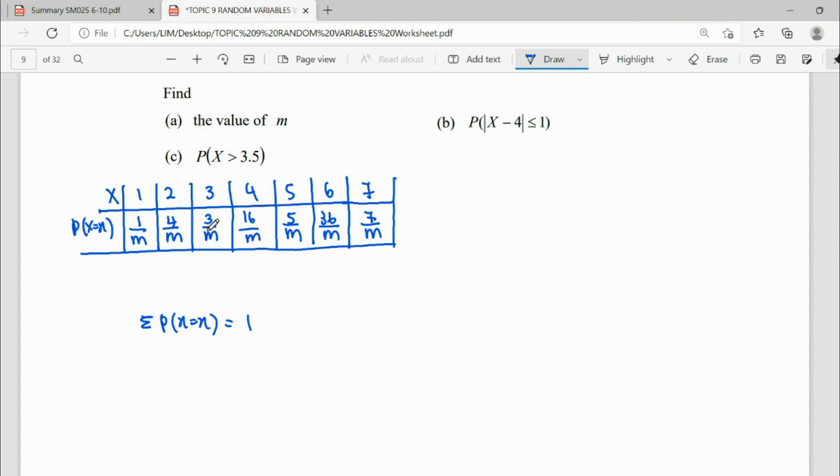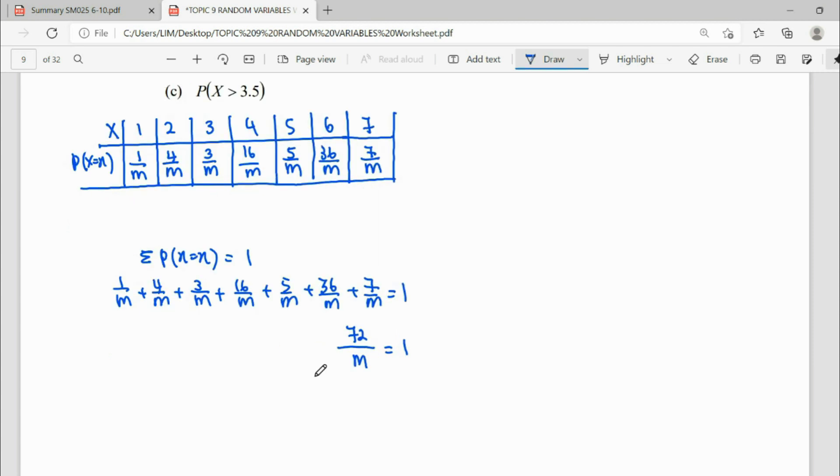So we total up these probabilities: 1 over m, 4 over m, 3 over m, 16 over m, 5 over m, 36 over m, and 7 over m. So they have same denominators, so we just add up the numerator value here. It gives us 72 over m. Then we cross multiply, 72 over 1 will equal to m. So therefore, we find our m is 72.